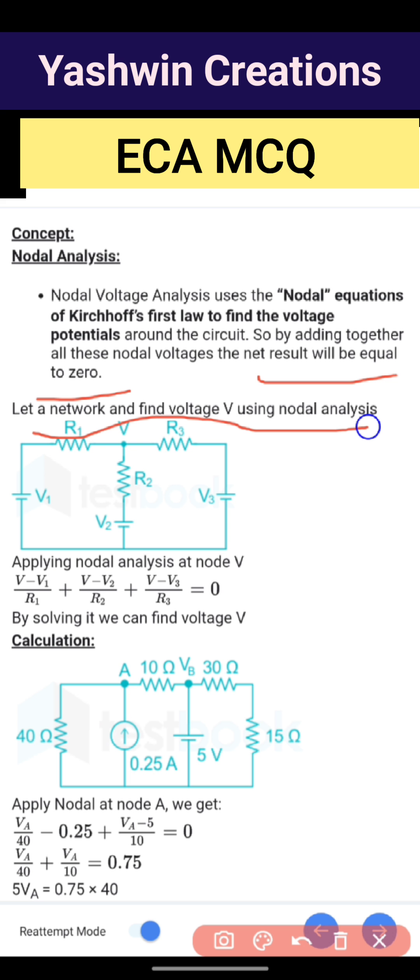Let a network find voltage V using nodal analysis. Applying nodal analysis at node V, we can write: (V minus V1) divided by R1, plus (V minus V2) divided by R2, plus (V minus V3) divided by R3, equals zero. By solving it, we can find the voltage.